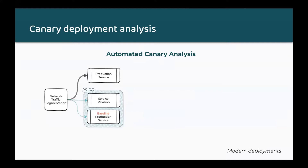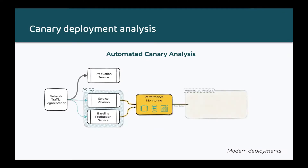The latest generation of canary analysis, termed automated canary analysis, routes a minority of incoming traffic to the service revision and a freshly initialized copy of the current production service. One way to think about this is that automated canary analysis is like a scientific study or experiment, where a control group — in this case a copy of the production service — is routed the same amount of traffic as an experiment group, the service revision. We'll refer to the copy of the production service as the baseline going forward. The performance of each of the instances is monitored with the same monitoring tooling that would be used in manual canary analysis. An automated analysis is then performed on the time series data of all the metrics collected, comparing the metrics data using advanced statistical techniques, resulting in a score. If the score is above a threshold, then the new service revision is promoted to production.